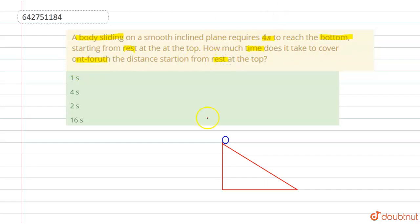In this question we have to find the time. Here is an inclined plane and this is a ball at the top. The downward acceleration is g sin theta, and this is angle theta.